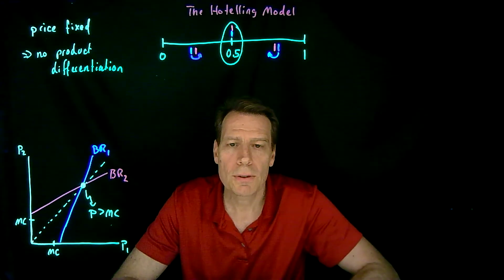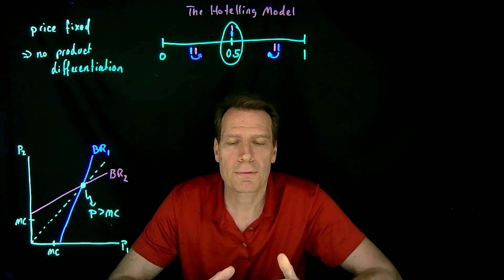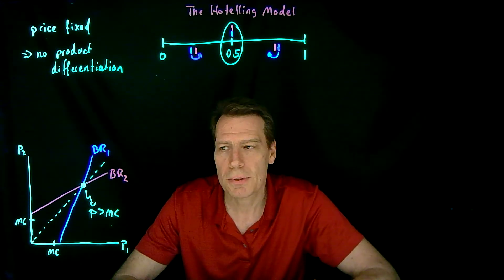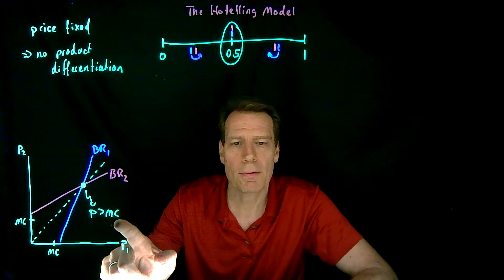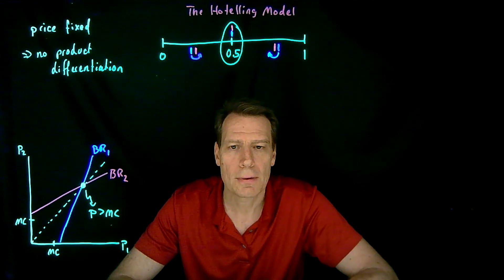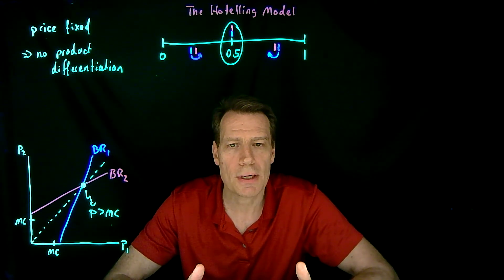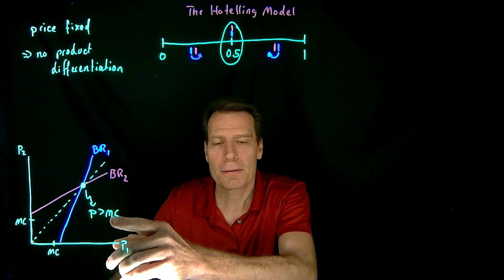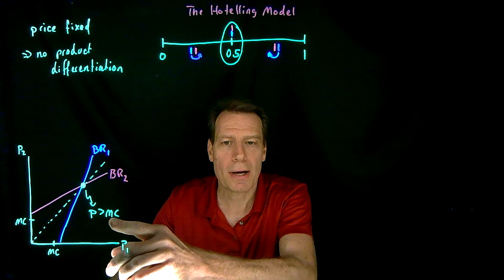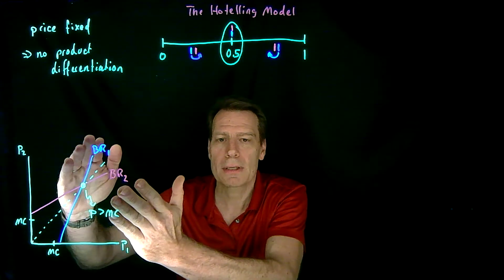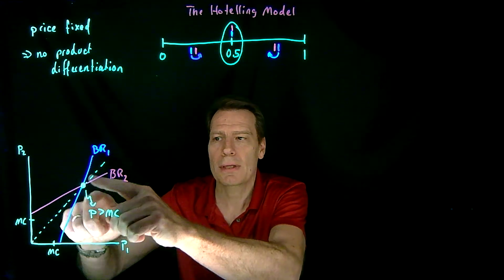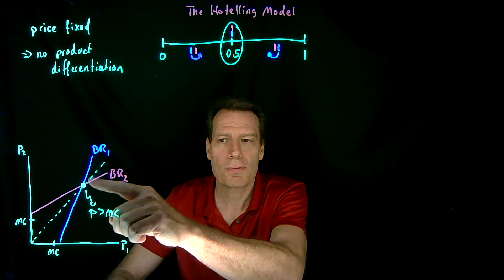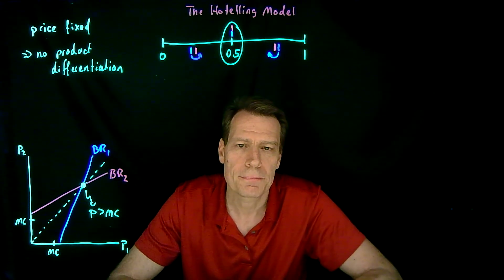But we know that product differentiation is what allows price-competing firms to price above marginal cost. And the more product differentiation there is, the greater they're going to be able to price above marginal cost, because the more these reaction functions are going to diverge, and that intersection is going to move up that 45-degree line.